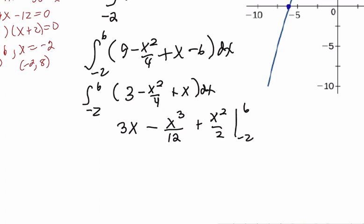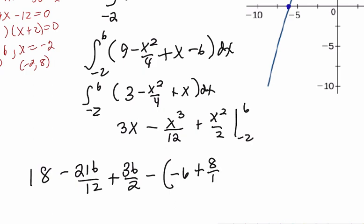Upper bounds minus lower bounds. So we get 18. 6 to the 3rd is 216. So that's 216 divided by 12. And then that's 36 divided by 2. Minus when we plug in negative 2. When we plug in negative 2, we get negative 6. Negative 2 cubed is negative 8, and that's going to become a positive 8. And the negative 2 squared is going to become a positive 4.